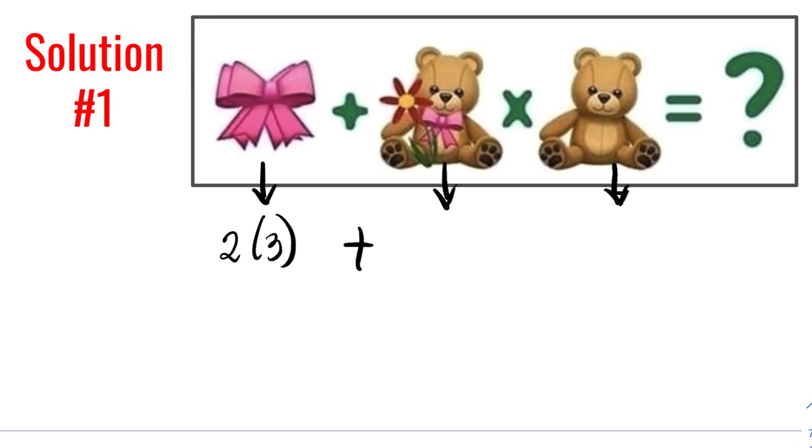Plus, what do you think is the value of the teddy bear? Since a teddy bear with ribbon is 10, if we take out the ribbon, that means the teddy bear value is only 7. So we have times 7.